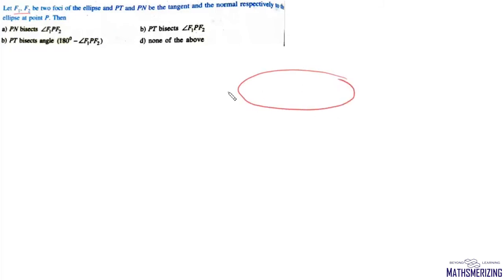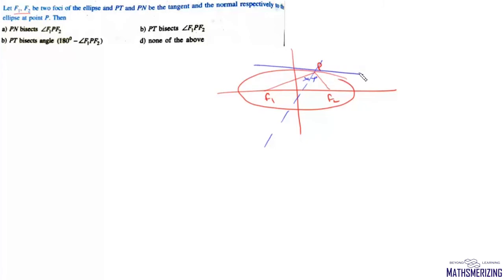The next question: let F₁, F₂ be two foci of an ellipse and PT and PN be the tangent and normal at any point P. We know that the normal bisects angle F₁PF₂ internally (PN bisects ∠F₁PF₂), and the tangent bisects the external angle (PT bisects the angle 180° − ∠F₁PF₂). So options (a) and (b) are correct.